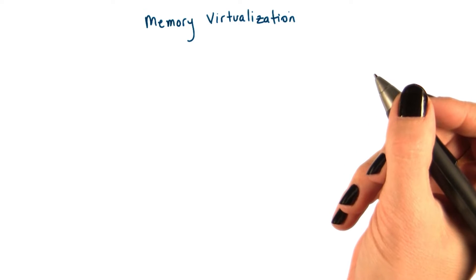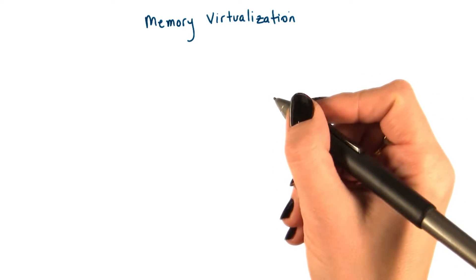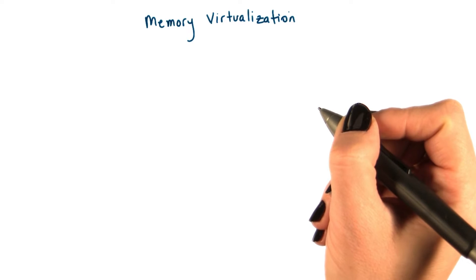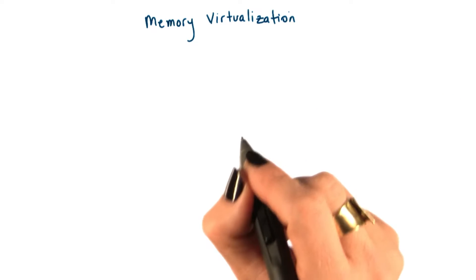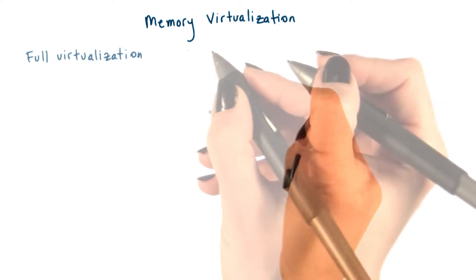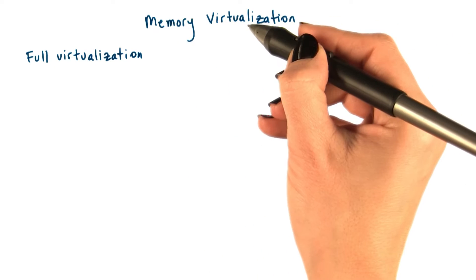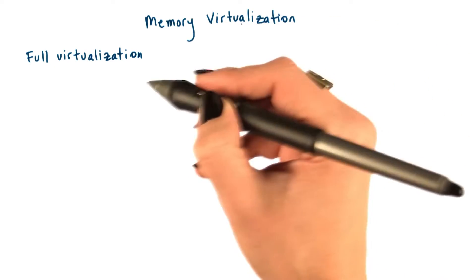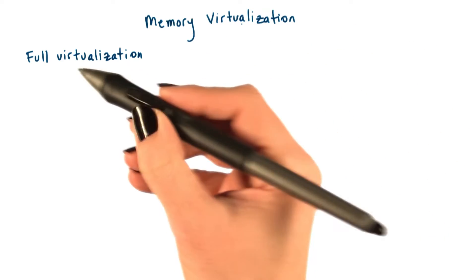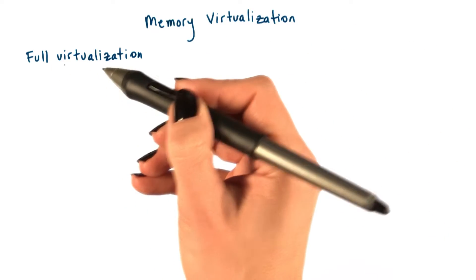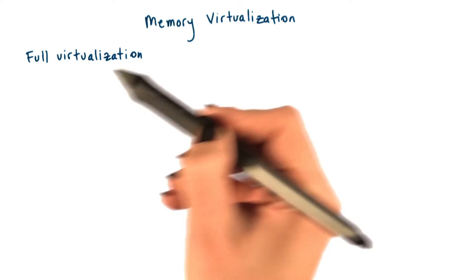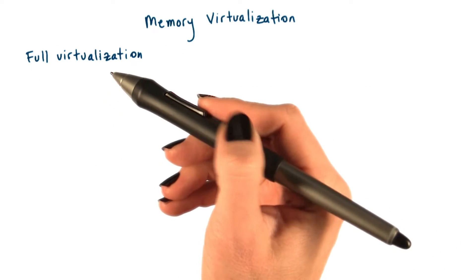So far we've focused on explaining the basics of how to virtualize efficiently the CPU, but let's now look at the other types of resources, looking at memory first. We will explain how memory virtualization can be achieved for the two basic virtualization approaches, whether it's based on full virtualization or requires guest modification. We will talk about full virtualization first.